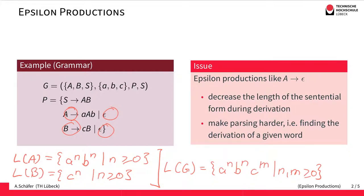However, there are certain issues with this kind of production. First, they decrease the length of the sentential form during the derivation. So once we have established a certain sentential form, if the grammar has epsilon productions, the sentential form we are currently looking at in the derivation gets shorter when we apply epsilon productions. That's not really nice because it makes parsing harder.